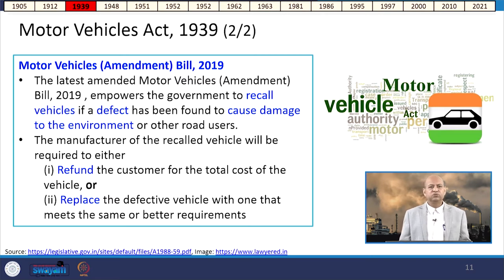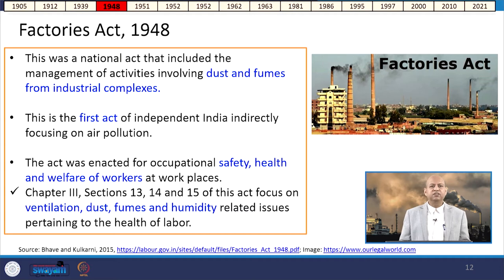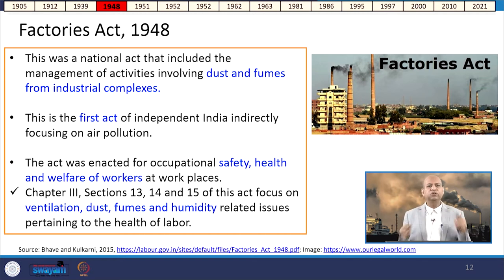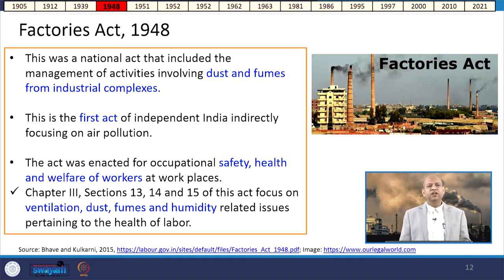Under the 2019 amendment, the manufacturer must either recall defective vehicles, refund the customer the total cost, or replace the defective vehicle. In 1948, the Factories Act was enacted — a national act addressing management of dust and fumes from industrial complexes. This is considered the first act of independent India to indirectly focus on air pollution, enacted for occupational safety, health, and welfare of workers at the workplace.